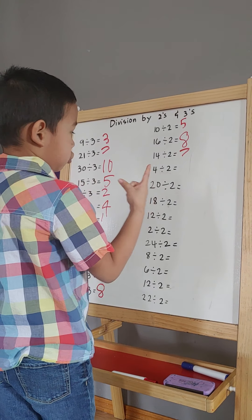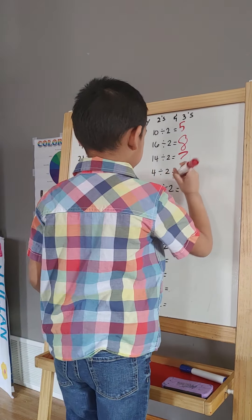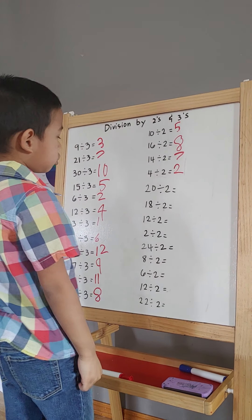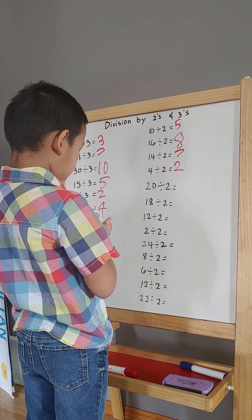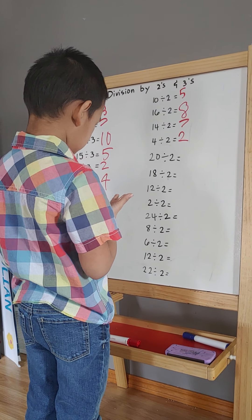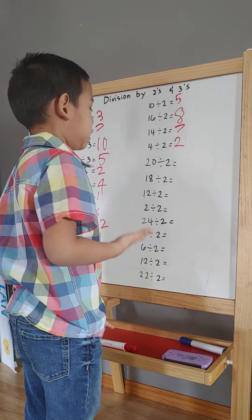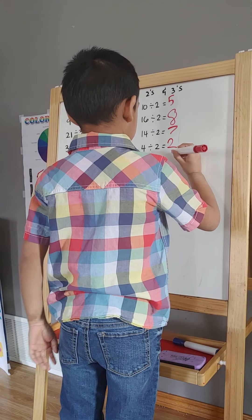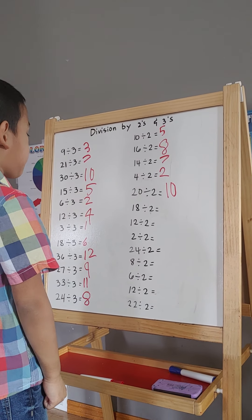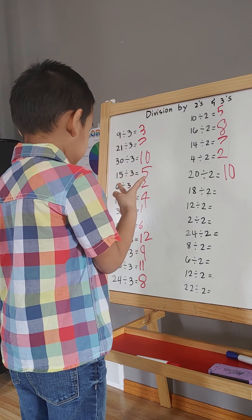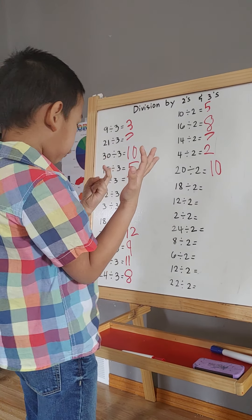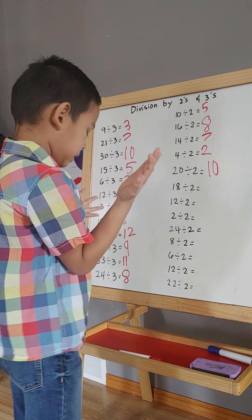14 divided by 2. 2, 4. 20 divided by 2. 2, 4, 6, 8, 10, 12, 14, 16, 18, 19, 20. 14 divided by 2. 2, 4, 6, 8, 10, 12, 14, 16, 18. So 8.